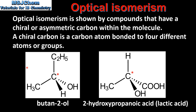Here we have two examples of molecules that have a chiral carbon, which is indicated by the red asterisk. If we look at the chiral carbon atom in butan-2-ol, we can see that it's bonded to four different atoms or groups. On the right we have a molecule of lactic acid, which also has a chiral carbon atom, and as you can see it's bonded to four different atoms or groups.